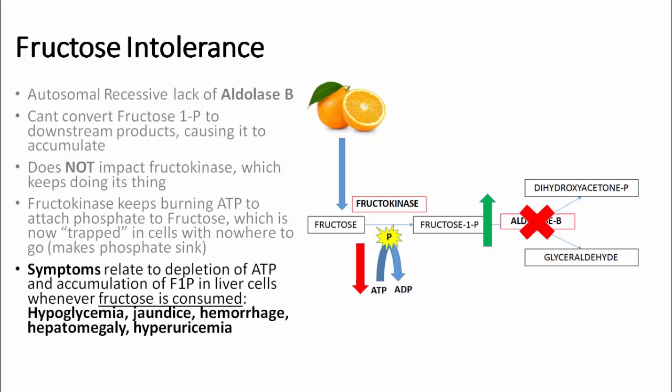Because of this, symptoms of fructose intolerance relate to the depletion of ATP and the accumulation of fructose-1-phosphate in liver cells, where it becomes trapped. These symptoms include hypoglycemia, jaundice, hemorrhage, hepatomegaly, and hyperuricemia, all of which can essentially be thought of as induced liver failure due to accumulation of dangerous fructose-1-phosphate inside the cell.